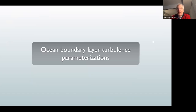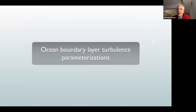In particular today, I want to describe how we are taking this approach to represent one of the key subgrid-scale processes that affect the ocean mean state — specifically, parameterization of ocean boundary layer turbulence. The other key ocean process is geostrophic turbulence, but we talked about that yesterday, so I won't repeat that story.